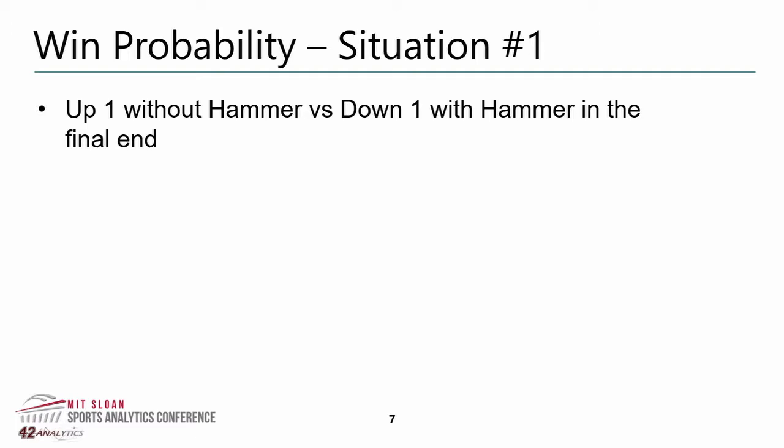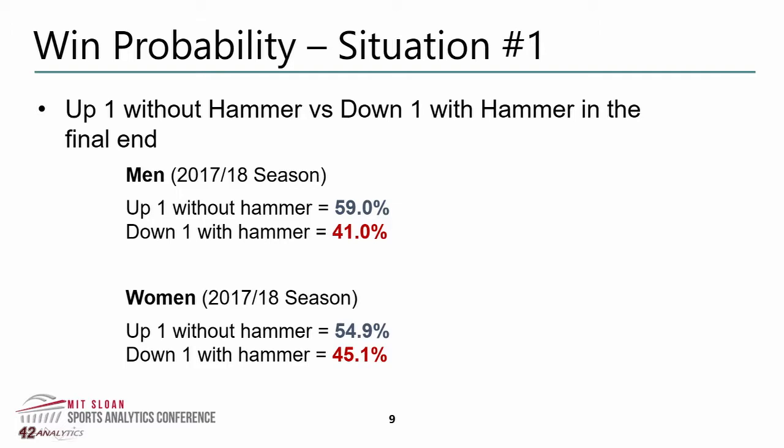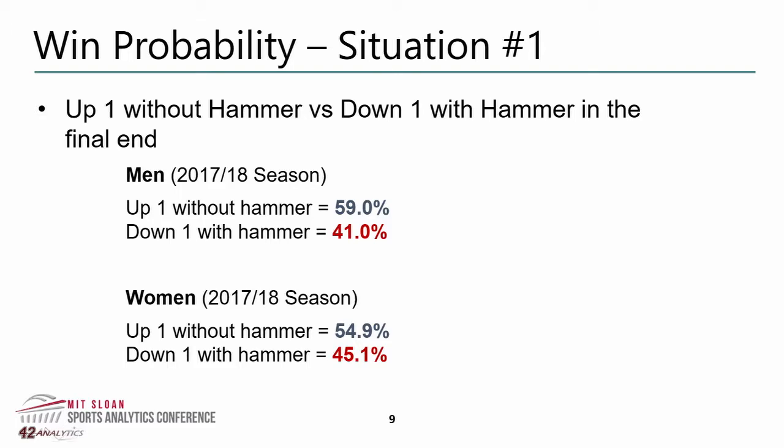A team is up one without last shot — without the hammer — or a team is down one with the hammer. Common thinking within the sport was that you wanted to have control of that last shot. But when we started looking at the numbers, it was actually the opposite. It sort of played into the human element of having control — high-performance athletes want to be the players to make things happen — but they were actually putting themselves in the less preferable position. This created a bit of a wave within the sport and a lot of discussion. Even today, commentators within the sport don't truly, totally understand this.